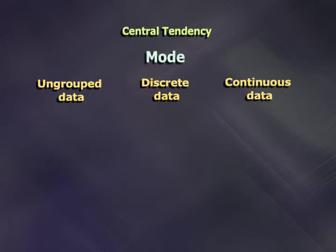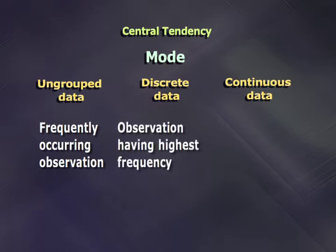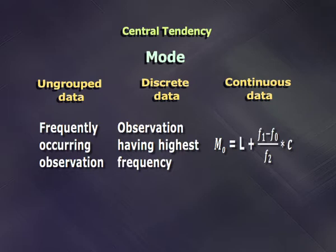For mode, for ungrouped data, it is the observation which is repeated the maximum number of times, or in other words the most frequently occurring observation. For discrete data, it is the observation having the highest frequency. For continuous data, the formula is l plus (f1 minus f0) upon (2f1 minus f0 minus f2) into c, where f1 is the frequency of the modal class, f0 is the frequency of the previous class, and f2 is the frequency of the succeeding class.